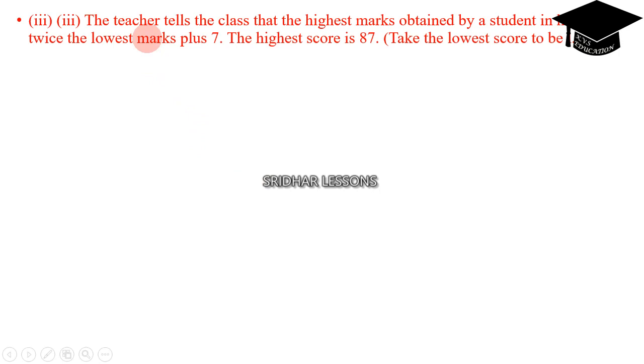Third question. The teacher tells the class that the highest marks obtained by a student in her class is twice the lowest marks plus 7. Keep this in your mind. The highest score is 87. Take the lowest score to be L. You have to indicate the lowest score with L.